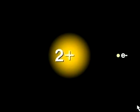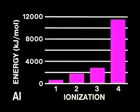This graph shows the way in which the ionization energies of the aluminum atom increase as successive electrons are removed. Notice that the ionization energy increases with each successive removal of an electron.